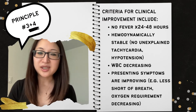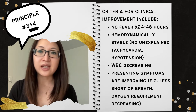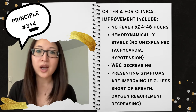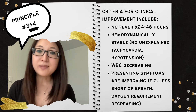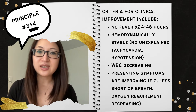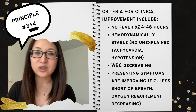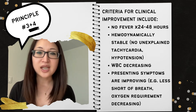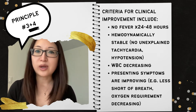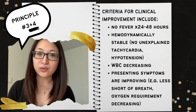To assess whether your patient is clinically improving or stable, look at their vital signs. There should be no fever for at least one to two days, and no unexplained tachycardia or hypotension. Their white blood cell counts should also be decreasing, granted they're not on medications such as corticosteroids that would affect this. Whatever symptoms they came in with that support the infectious diagnosis — such as dyspnea or shortness of breath for pneumonia — should also be improving.